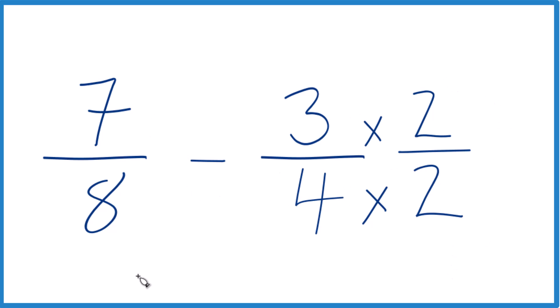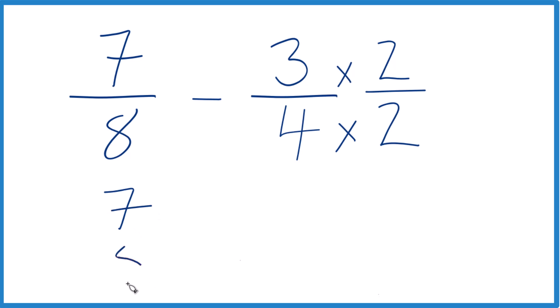But now we have our 7 eighths here. And then we're going to subtract 3 times 2 is 6. And then 4 times 2 is 8. So you see we've got this common denominator. That's what we wanted.